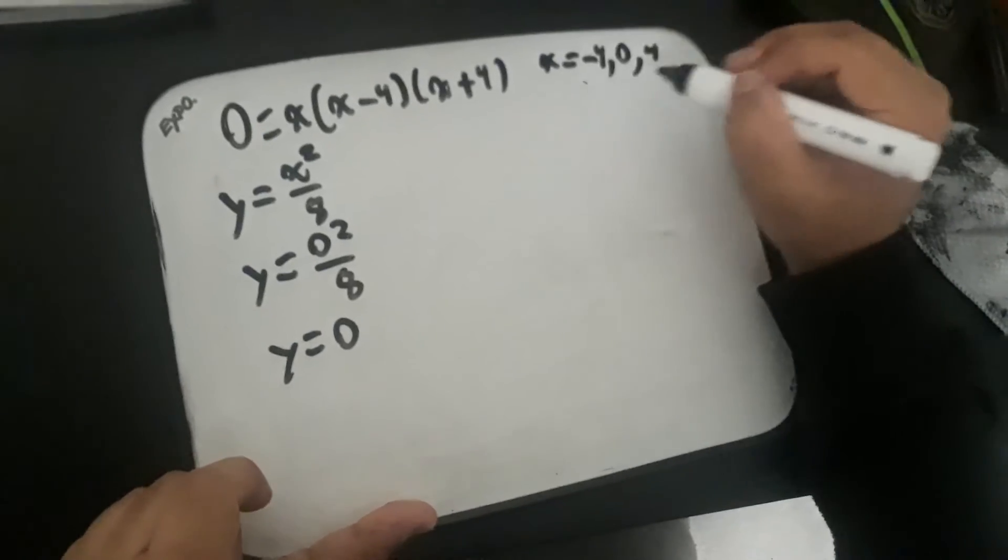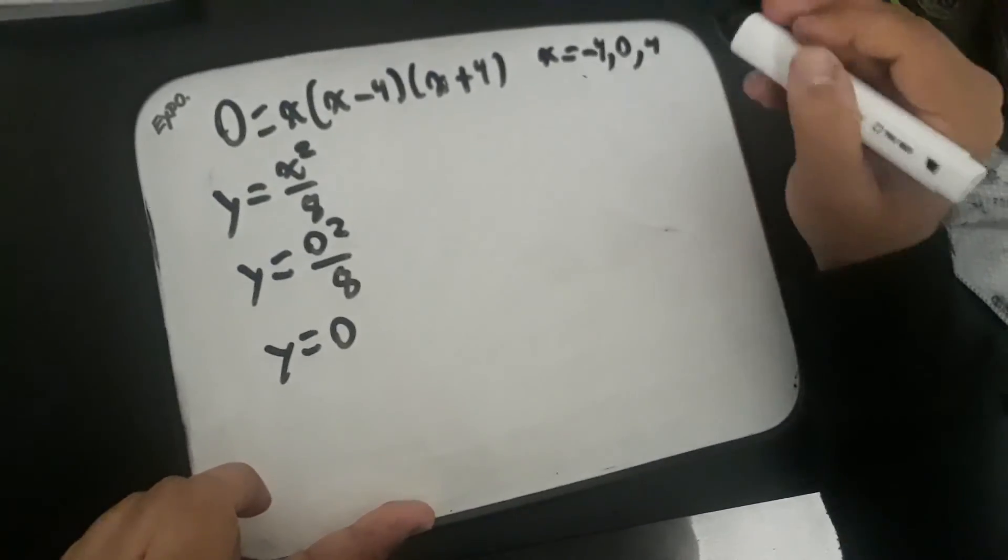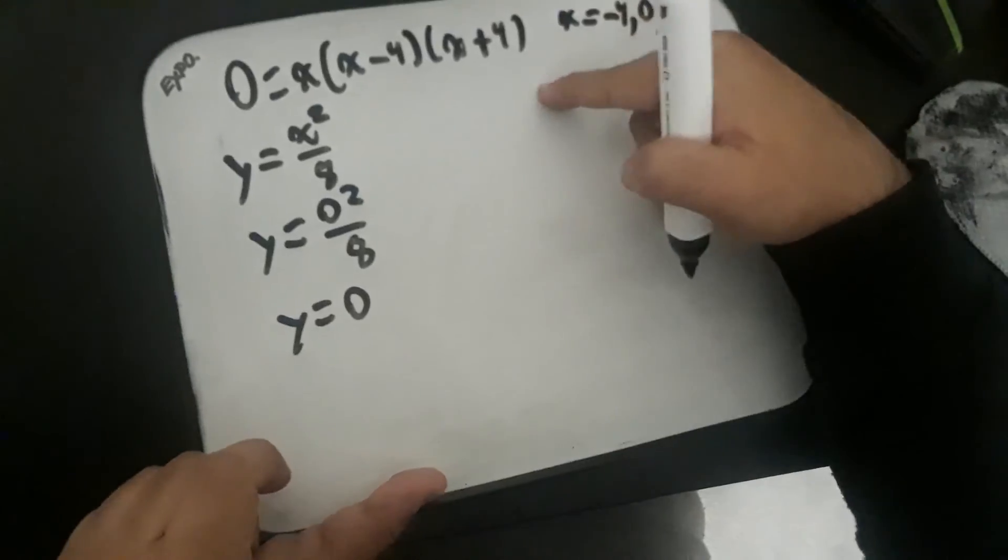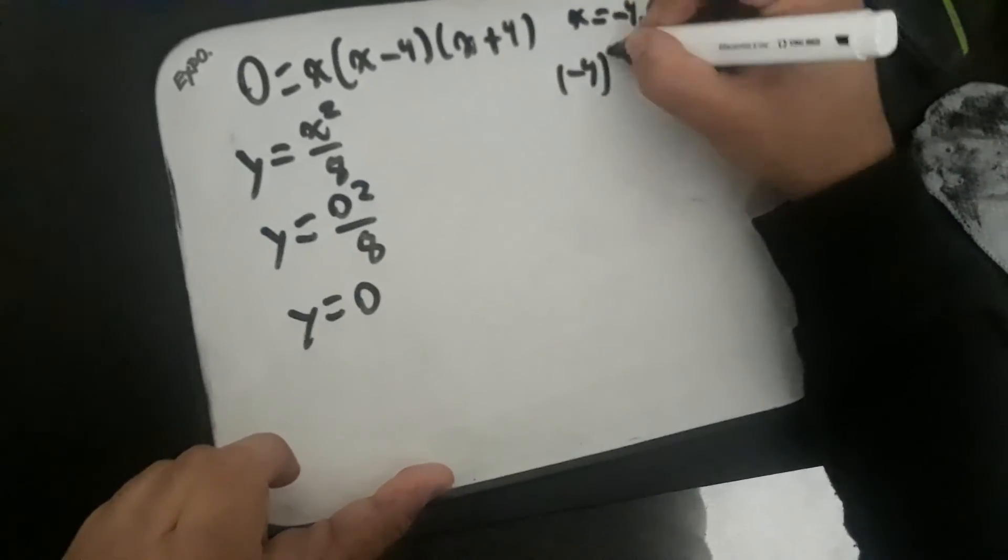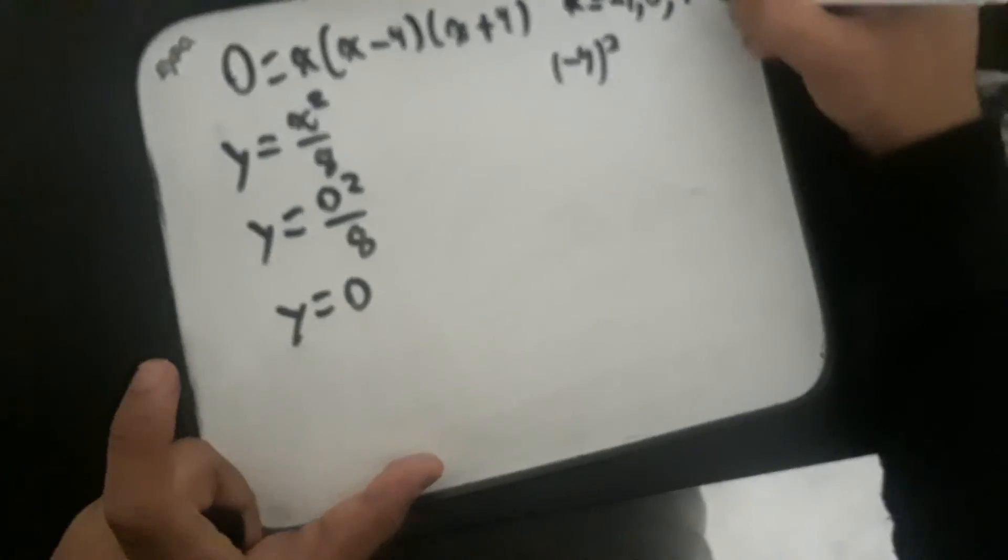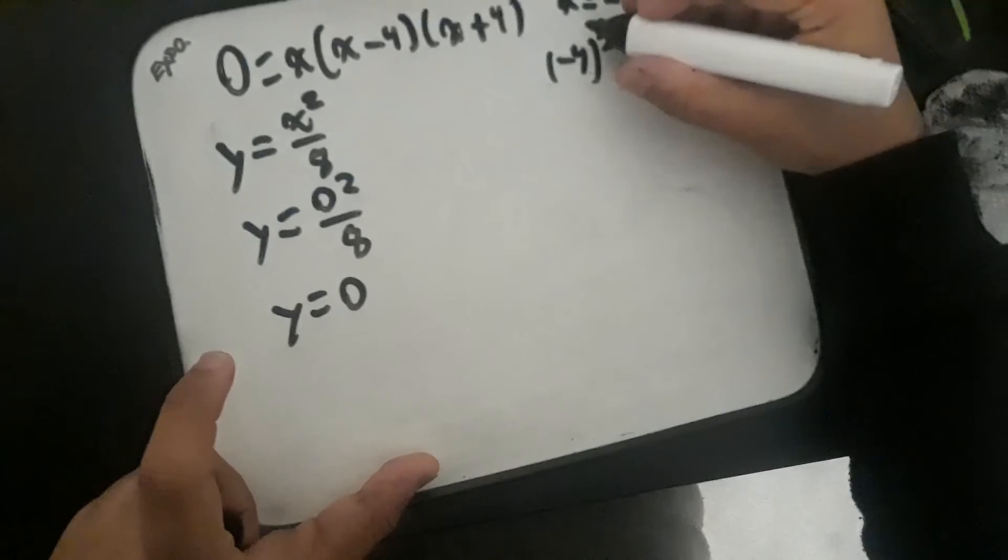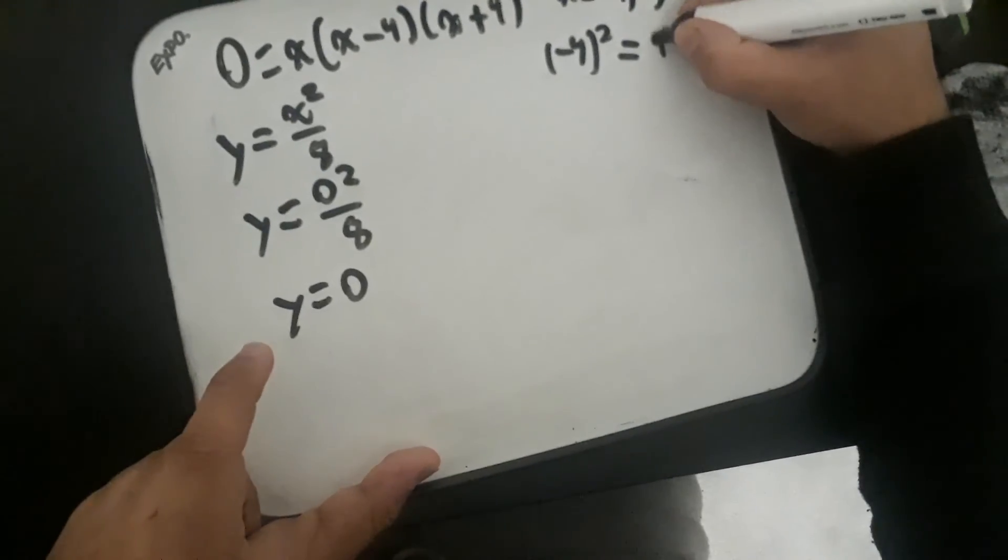Now both of these points would have the same y value because when you square any negative number, so negative 4 squared, it would be equal to the square of its positive integer. So negative 4 squared equals 4 squared, and they both equal 16.